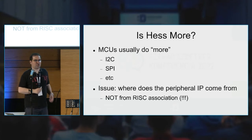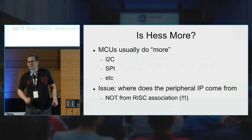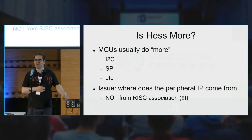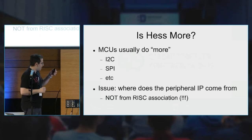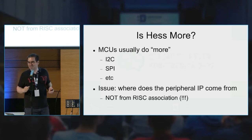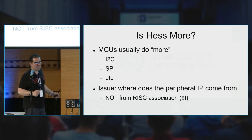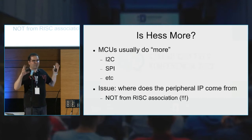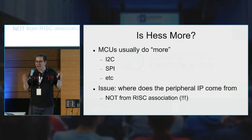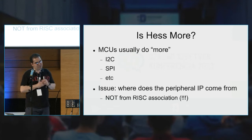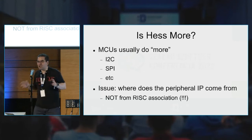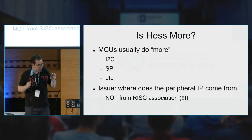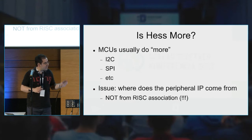Now a little question: who of you ever did some heavy microcontroller work? So you use SPI, I2C, all these peripheral units. The famous Hess-Moore aside, the problem is these peripheral intellectual properties are a completely different pair of socks — they are not part of the RISC-V specification. So if you want to make a RISC-V microcontroller, not only do you need the ISA, but you also need to get the peripheral IP from somewhere.